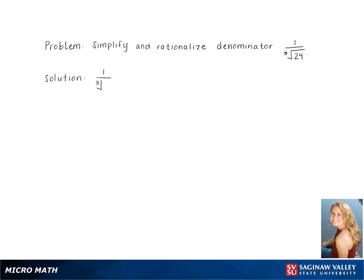To simplify 1 over the cube root of 24, we start by breaking down the radical using factors.